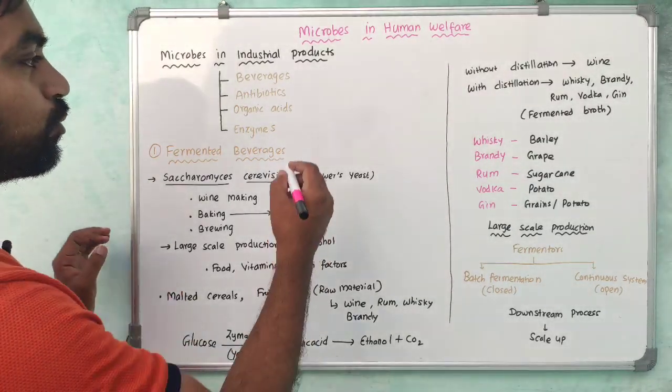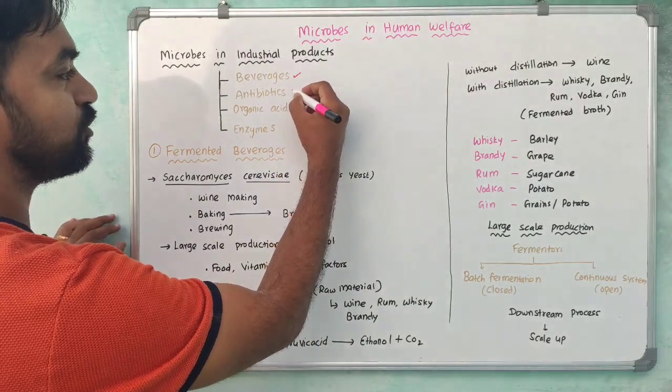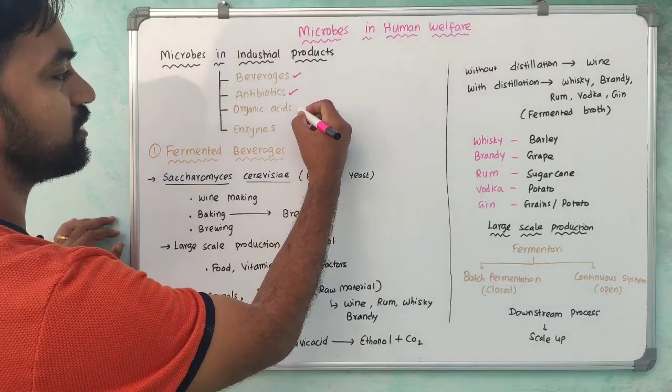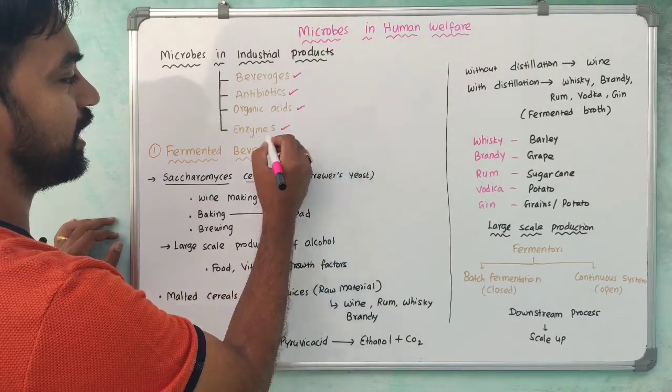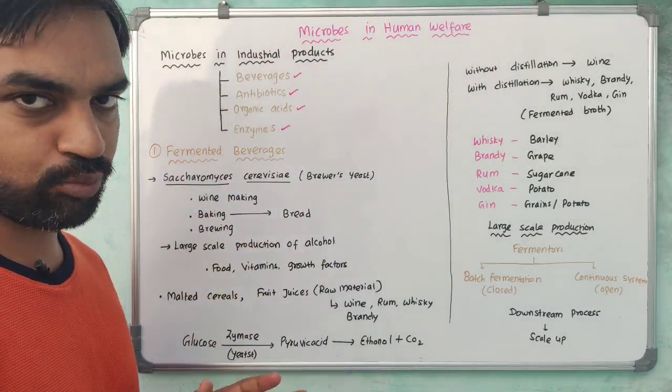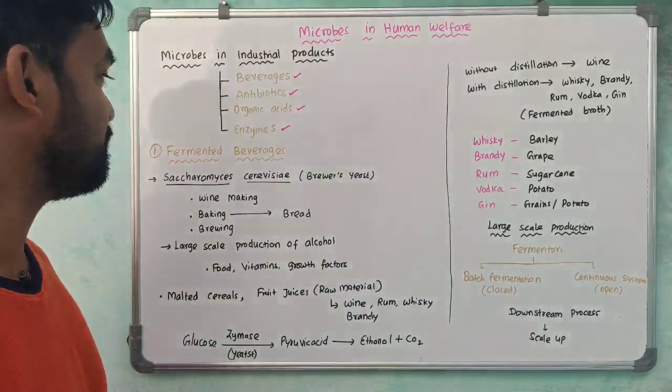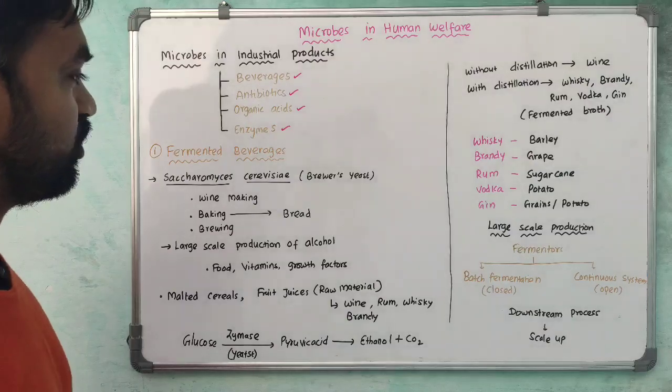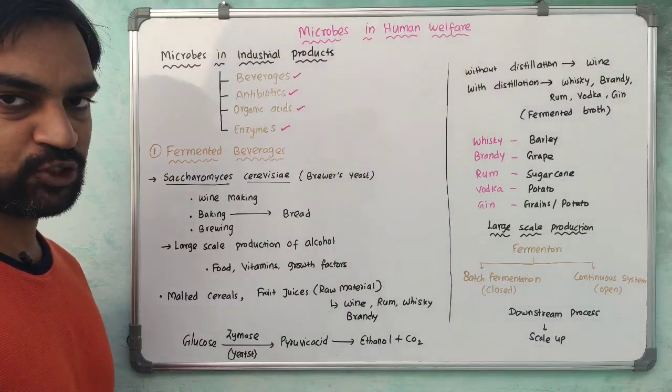In the industry, we talk about beverages, antibiotics, organic acid, and enzymes. In these four industries, microbes are very helpful. First, we talk about fermented beverages.